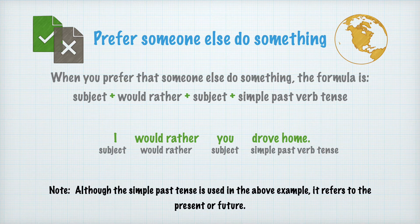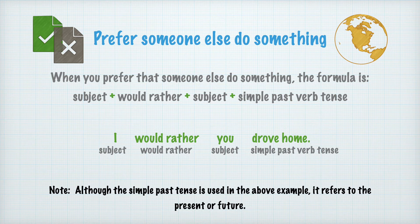Notice: although the simple past tense is used in the above example, it refers to the present or future. Nota: aunque el pasado simple se usa en el ejemplo mostrado, se refiere al presente o al futuro. I would rather you drove home. Preferiría que tú conduzcas a casa. En este caso, es evidente que la acción no se llevaría a cabo en el pasado.